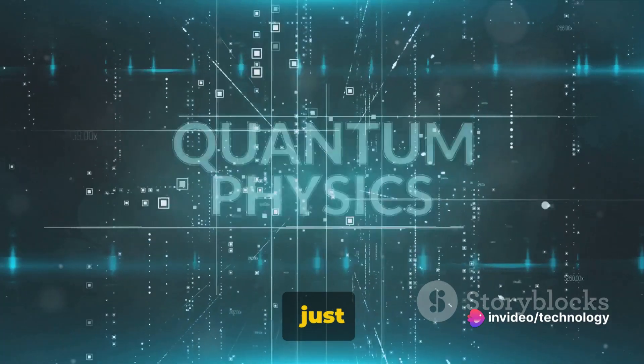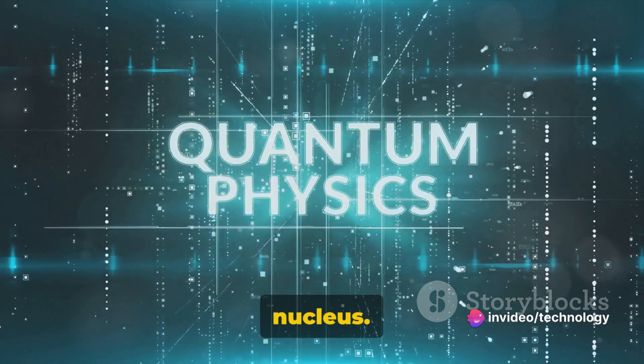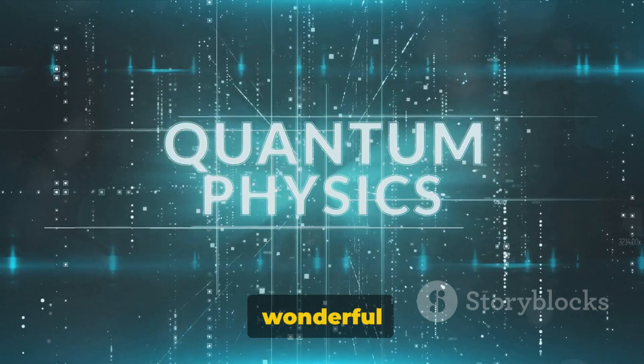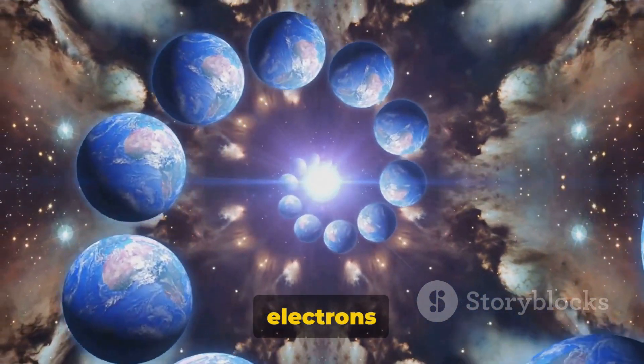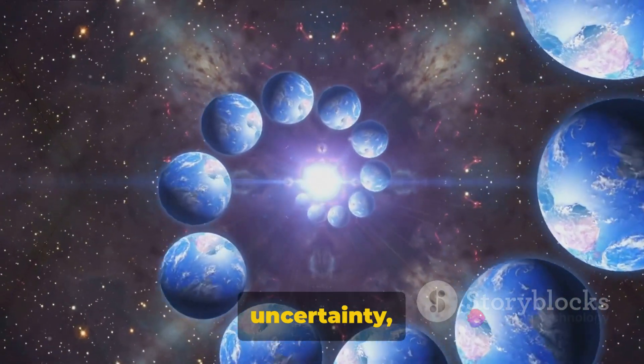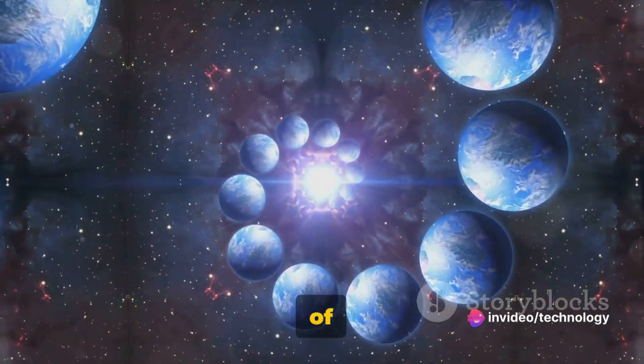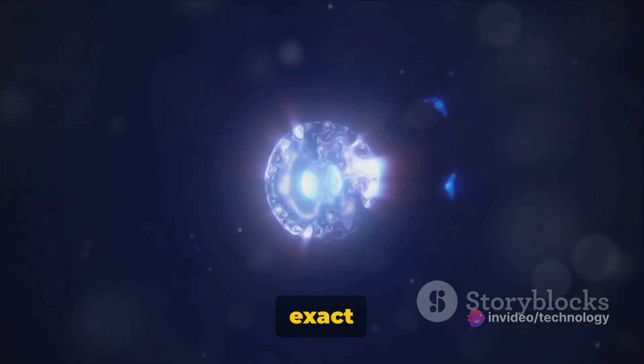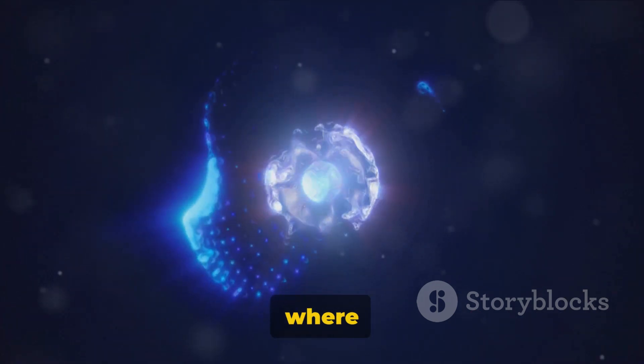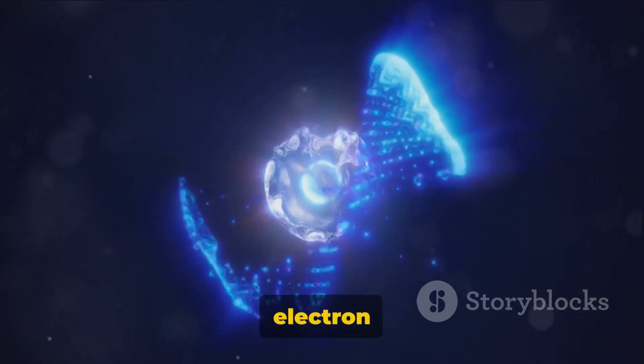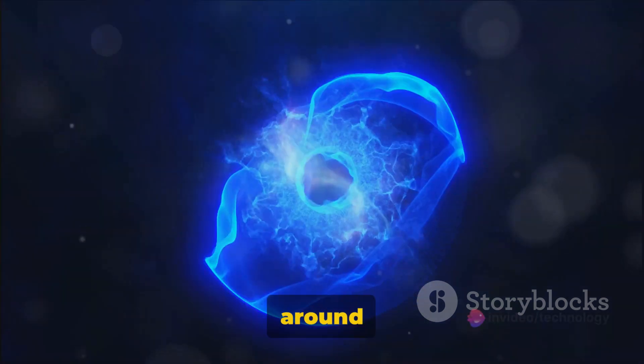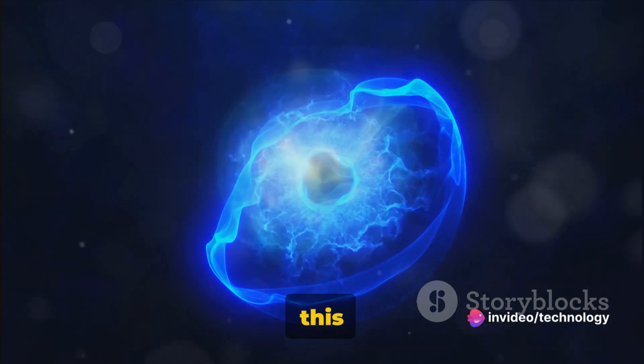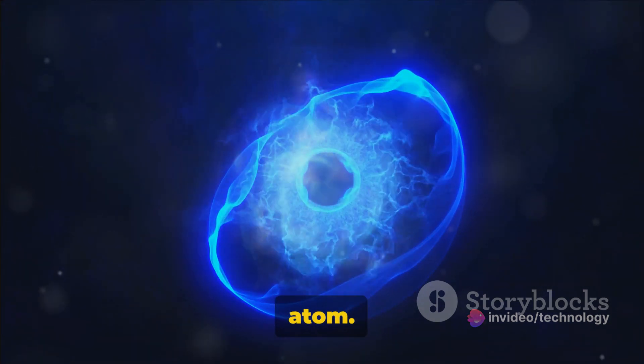However, electrons are not just tiny dots whizzing around the nucleus. They inhabit a fuzzier, more mysterious realm. Thanks to the weird and wonderful rules of quantum mechanics, electrons exist in a state of uncertainty, popping in and out of existence in different locations around the nucleus. While we can't pin down an electron's exact location, we can predict where it's likely to be. This is known as the electron cloud, a region around the nucleus where the electron is most likely to be found. It's this cloud that defines the shape and size of the atom.